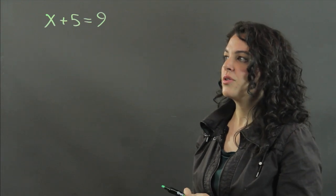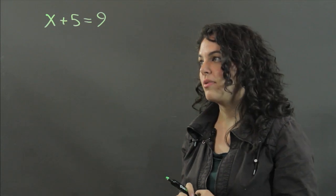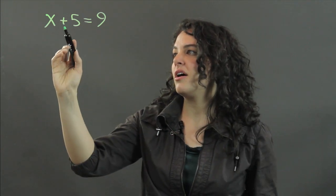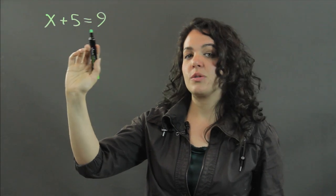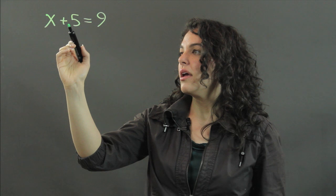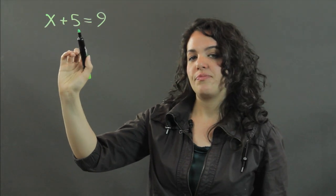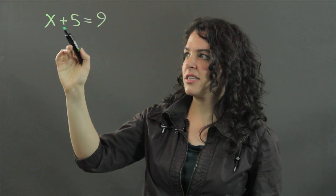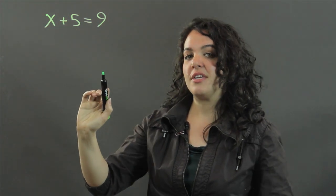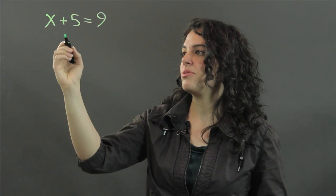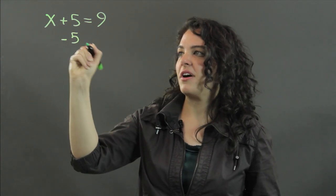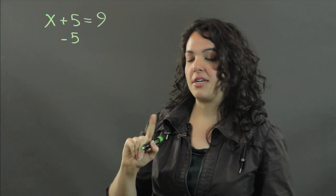In this case, we're going to use the inverse operation. So we look at what is going on between x and 5 because we want x alone. And what we have is addition. So in order to get x alone and get rid of the 5, we're going to do the inverse of addition, which is subtraction. And we're going to subtract 5 from both sides.